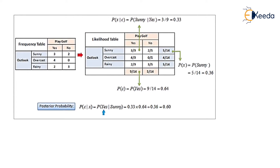This is the frequency table where we calculate the outlook — sunny, overcast, and rainy — and we calculate the probability of yes or no. After counting the occurrences of yes and no, we calculate the likelihood table. In that, we calculate P(X|C): for sunny/yes that is 3/9, for sunny/no that is 2/5 — because 3+4+2=9 and 3+0+2=5. After calculating all the probabilities, we also calculate the total yes, total no, total sunny, overcast, and rainy.